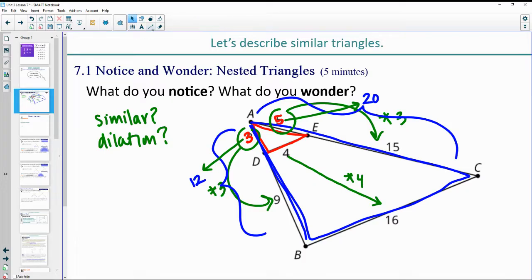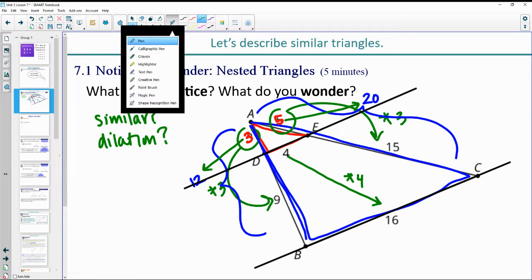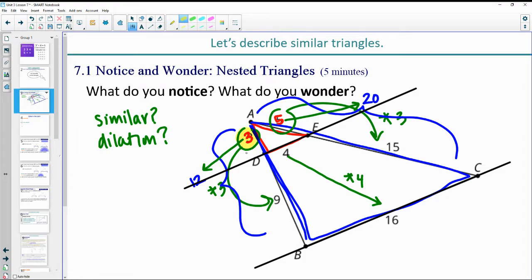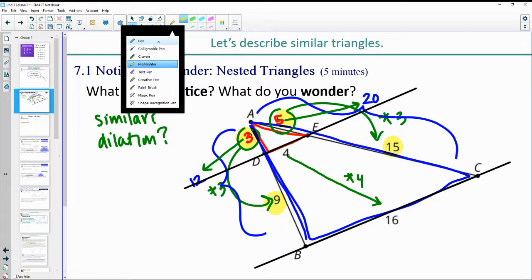And maybe you saw these lines here and you either wondered if they were parallel or maybe you were able to determine that they were parallel. Remembering that we have the triangle proportionality theorem, that if these sides, these little chunks are proportional, so multiply by three, multiply by three, then you knew that those lines were parallel.